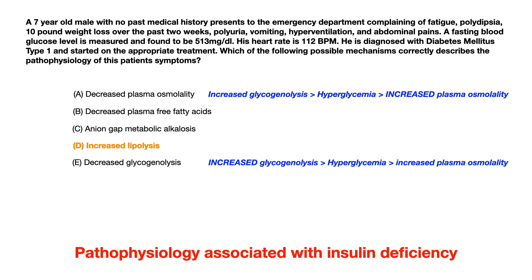When you increase levels of glycogenolysis, you are lysing glycogen, and the net effect is putting more glucose in the blood — you get hyperglycemia. Therefore, when there are increased levels of glucose in the blood, you get increased plasma osmolality. So when you take a patient who has diabetic ketoacidosis or is just insulin deficient, when you measure their blood glucose, you see very high levels, and that high level of glucose causes increased plasma osmolality.